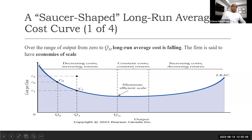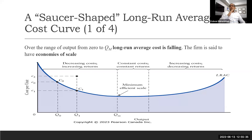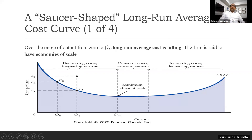The first portion is where the long run average total cost is decreasing — it slopes downward. Then it flattens out, and after that it starts increasing, which is why it is saucer-shaped. This downward-sloping portion is called decreasing cost, or equivalently increasing returns, because when we add more inputs, output increases more than proportionally to the inputs added.